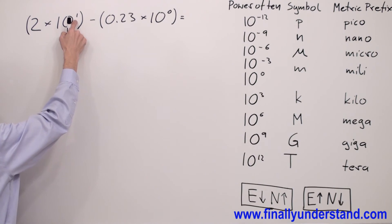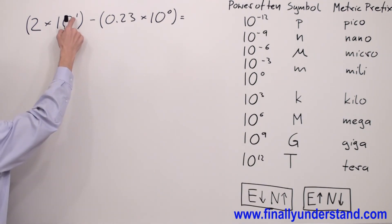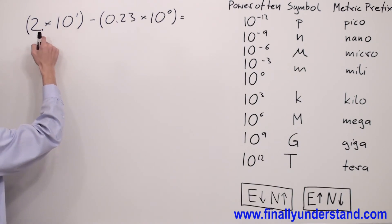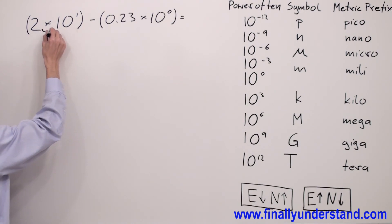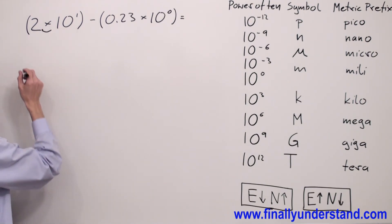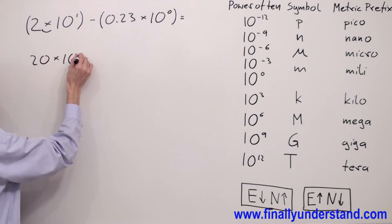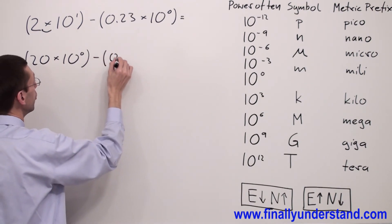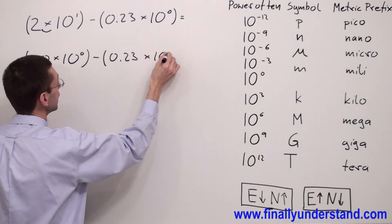My exponent is going to go down because I have to convert 1 to 0, so my number has to go up. My decimal point is over here, and in order to make this number bigger, I have to move the decimal point once to the right. That's why I'm going to have 20 times 10 to 0 minus 0.23 times 10 to 0.